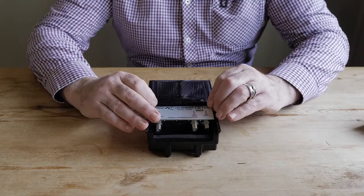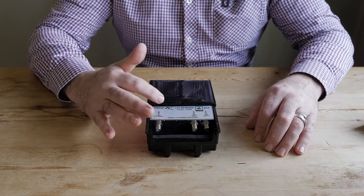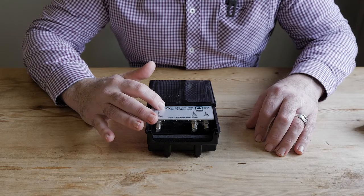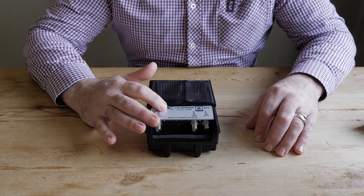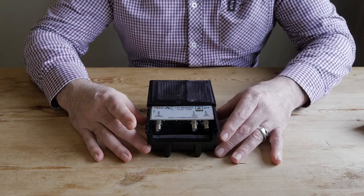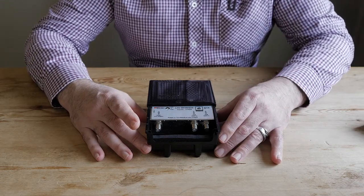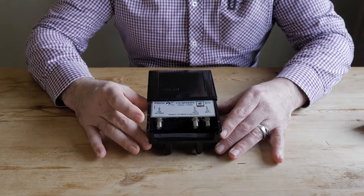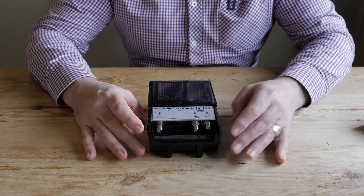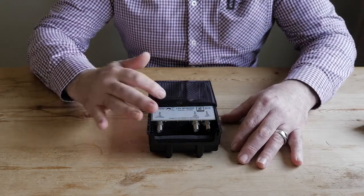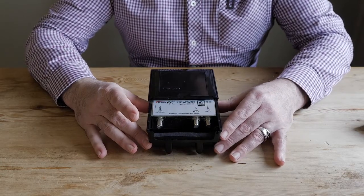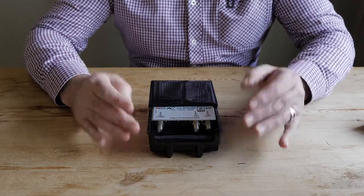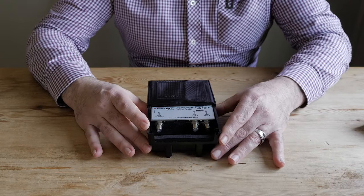You'll also see on the unit here we have a variable gain. In this case it goes from 12 dB to 25 dB, and you adjust this with a small flat head screwdriver or something similar. They usually come default from the manufacturer at 12, and therefore you can just adjust the level up as needed once you get an accurate reading from your analyzer to see what the levels are.